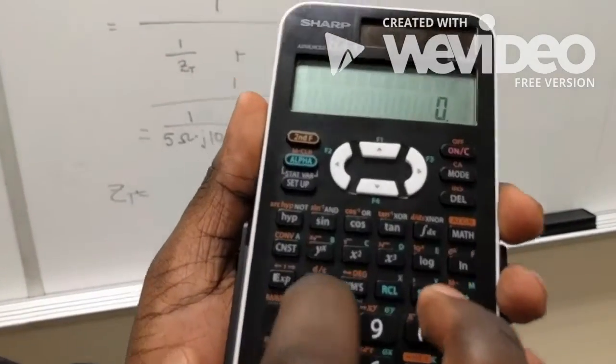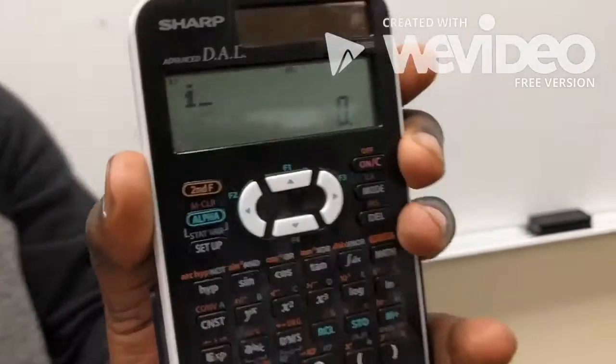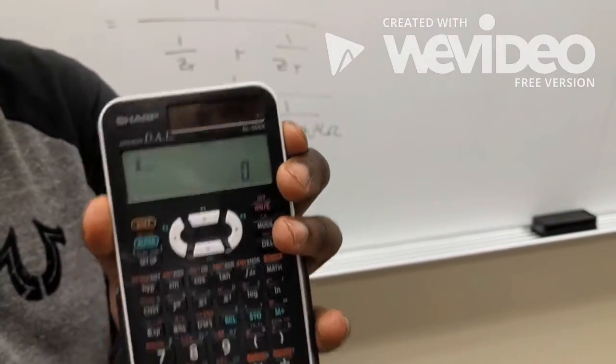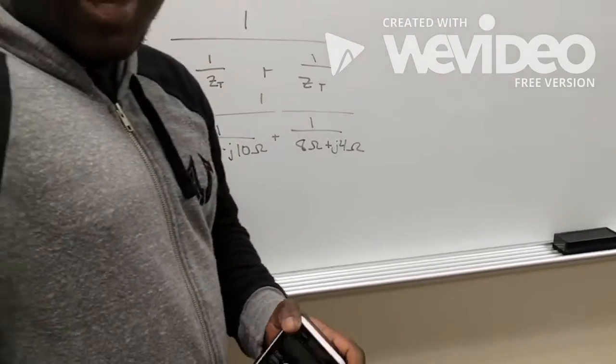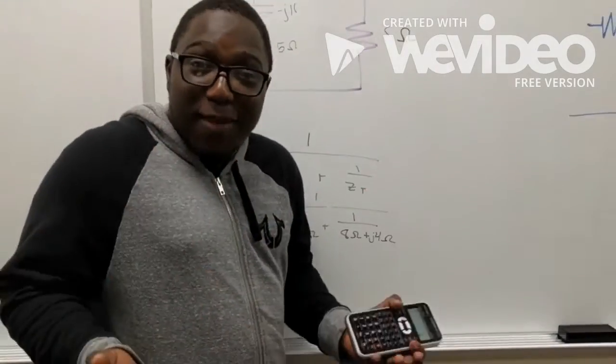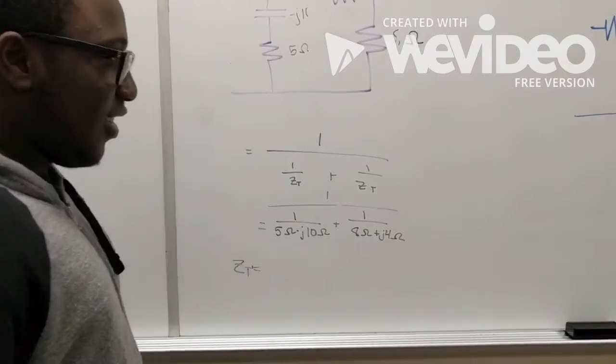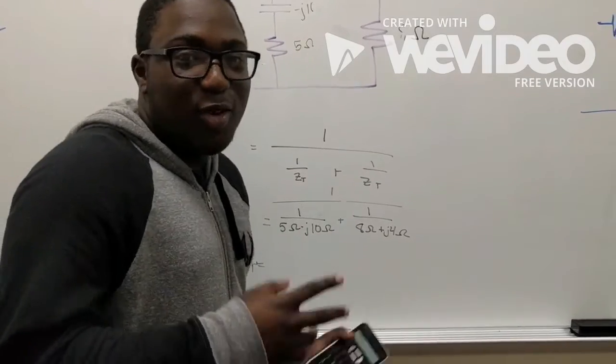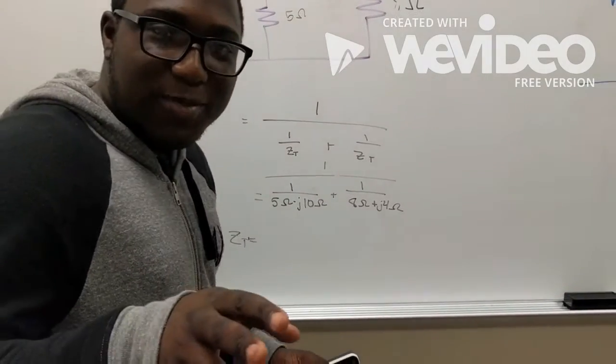And then, you press the I button to include the J into your calculations. I and J are two different letters, but they mean the same thing in circuitry. Negative 90 or 90 for clarification purposes.